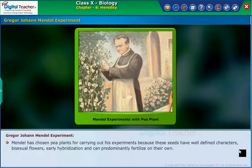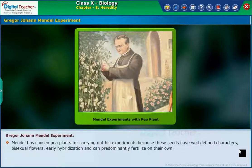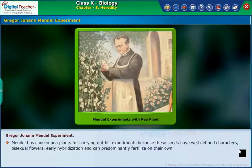Mendel chose pea plants for carrying out his experiments because these seeds have well-defined characters, bisexual flowers, allow easy hybridization, and can predominantly fertilize on their own.